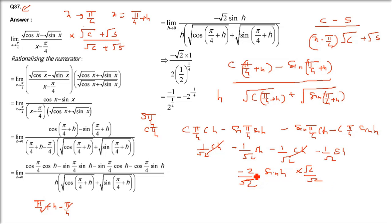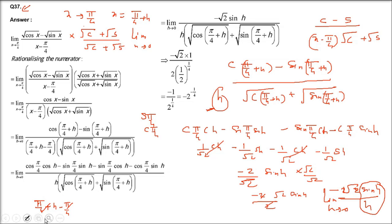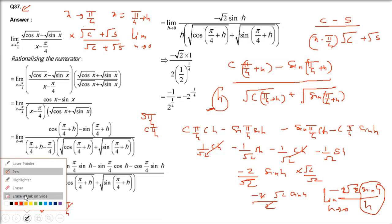So the numerator is -√2·sin(h) and denominator has h. We get -√2·sin(h)/h. As h→0, sin(h)/h = 1, so we get -√2 in the numerator. The remaining denominator is (√cos(π/4 + h) + √sin(π/4 + h)) with h→0.